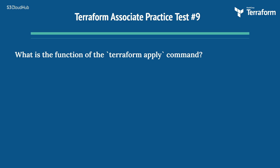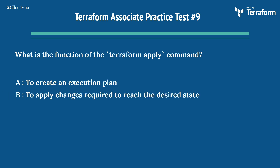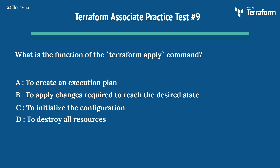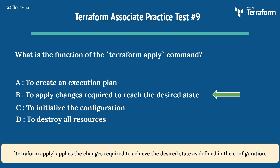Question 9: What is the function of the Terraform apply command? Options: A) To create an execution plan, B) To apply changes required to reach the desired state, C) To initialize the configuration, D) To destroy all resources. The right answer is B) To apply changes required to reach the desired state. Terraform apply applies the changes required to achieve the desired state as defined in the configuration.